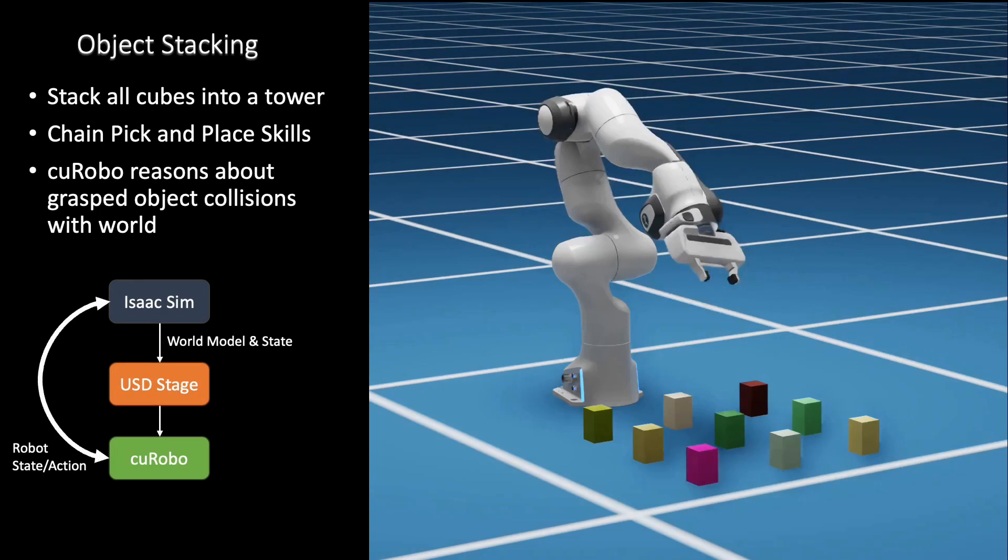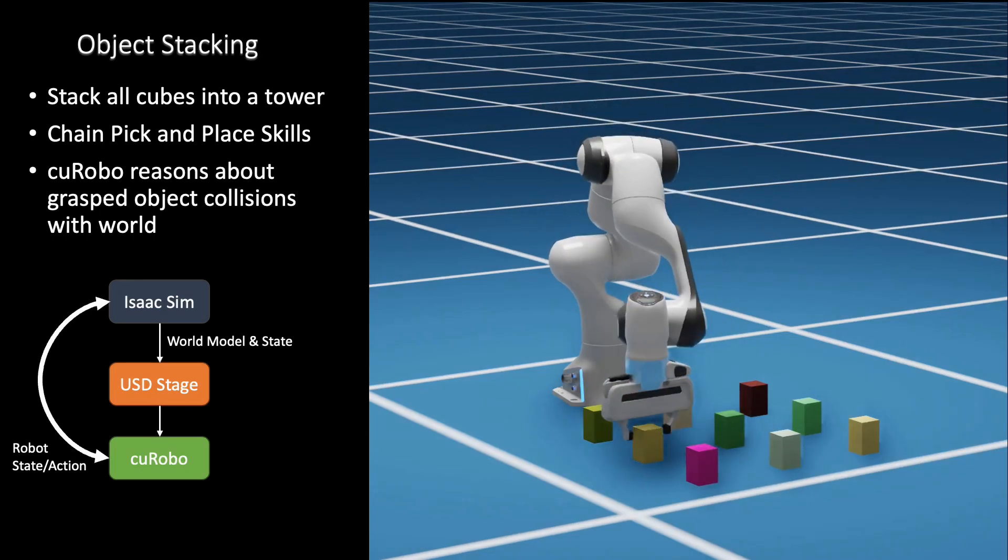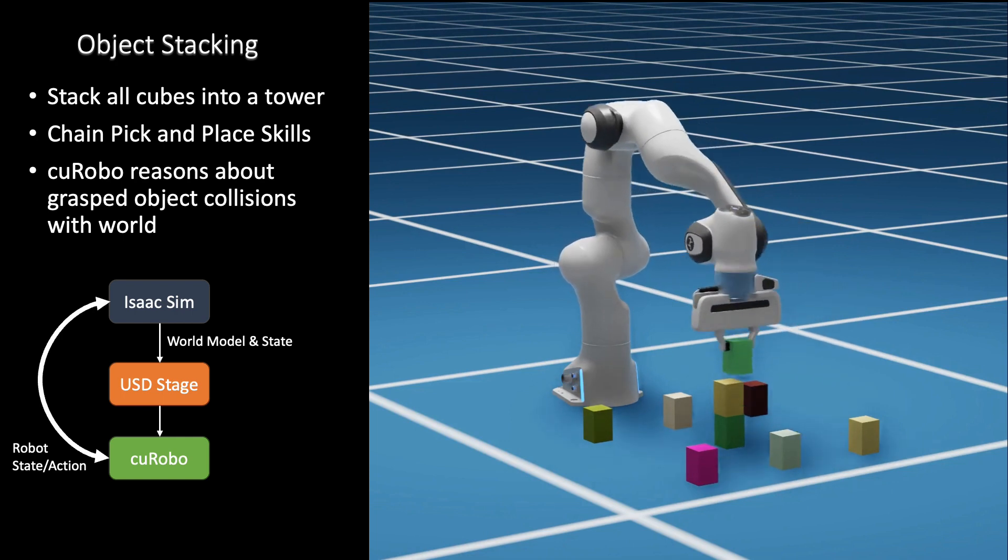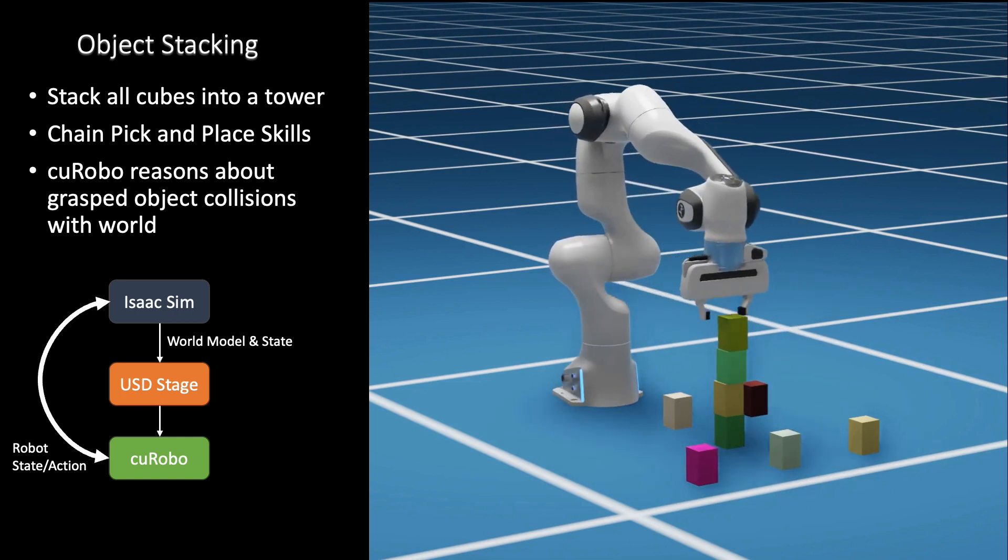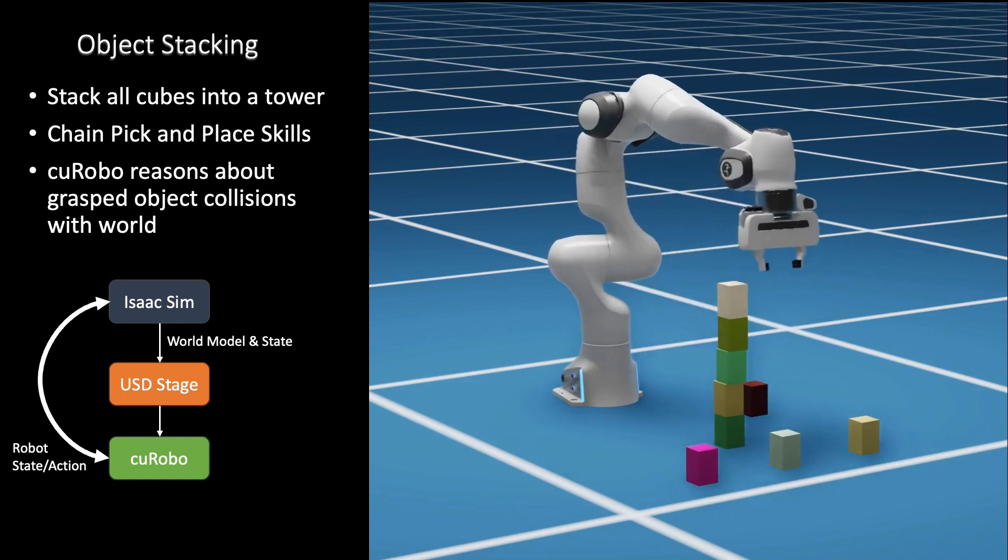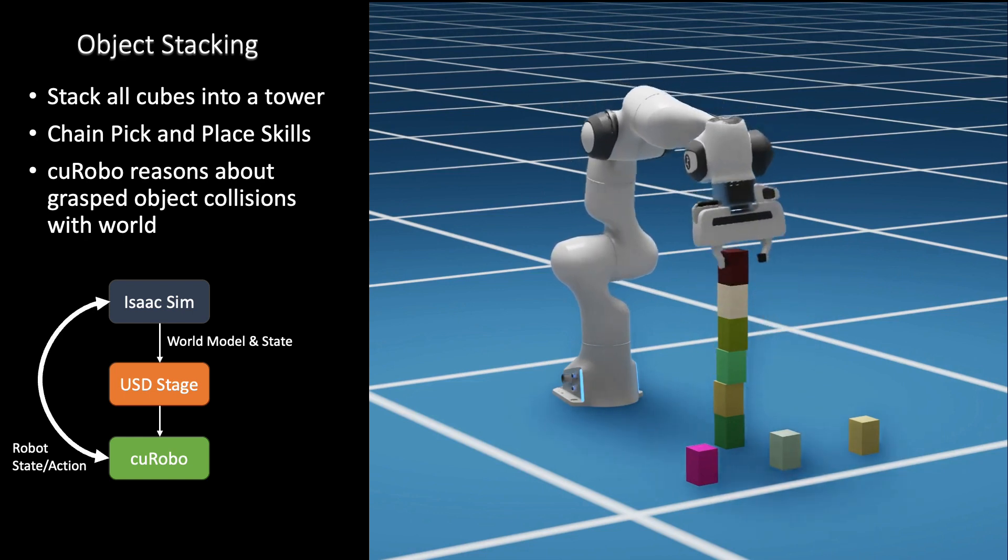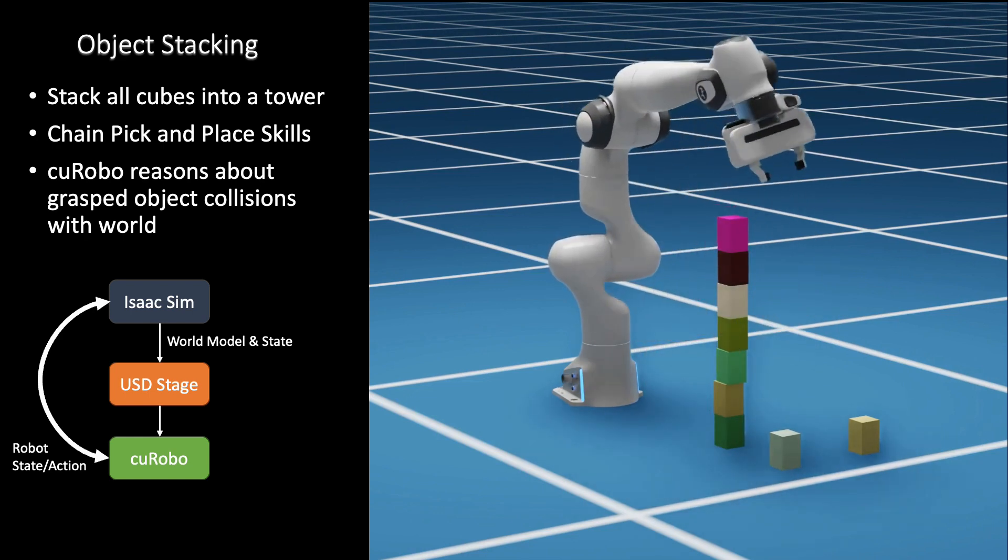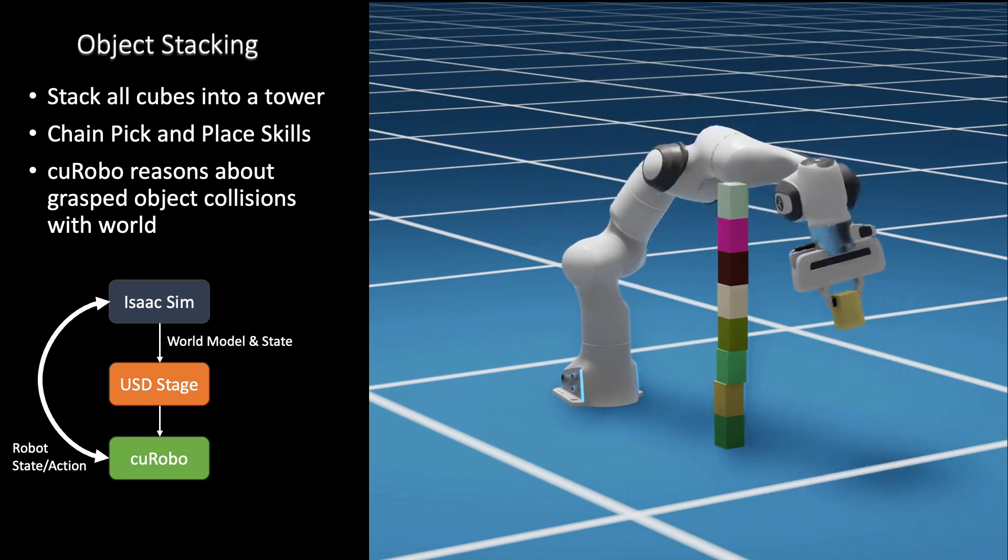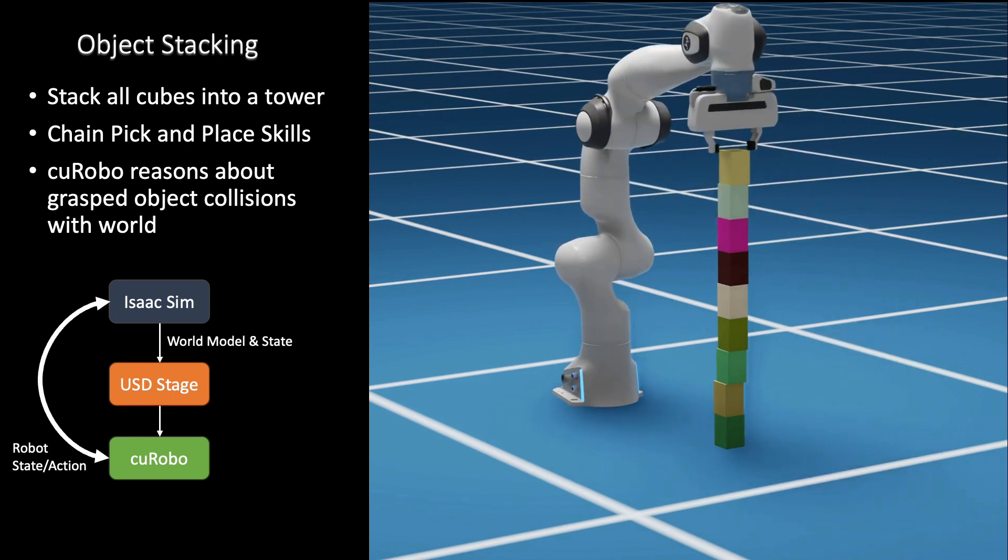Kurobo also provides APIs to attach objects to a gripper, which is a standard procedure in pick and place tasks. We provide a USD stage synchronizer that can read the world from a simulation environment such as NVIDIA Isaac Sim. This feature is used in this example here to stack cubes into a tower. Kurobo avoids stacked cubes during subsequent motions. The generated motions also avoid collisions between the grasped object and the world.